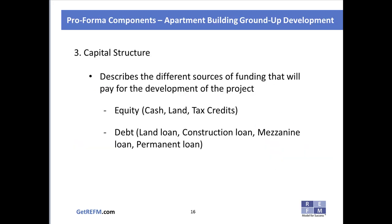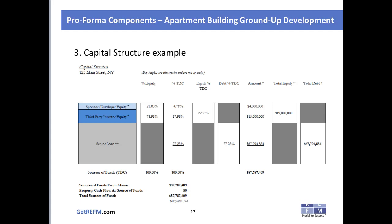The capital structure tab describes the different sources of funding that will pay for development. Funding sources fall into two categories: equity or debt. Equity can be cash, land, or tax credits converted into cash. Debt can take the form of a land loan, construction loan, mezzanine loan, and sometimes a permanent loan to replace the construction loan. The capital structure section shows all equity sources and debt comprising the total project cost.